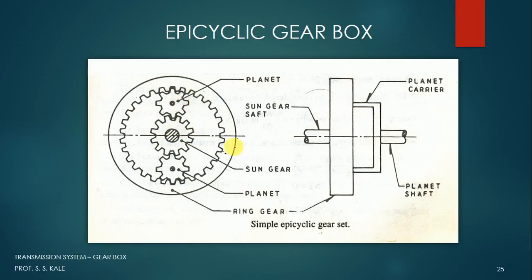Another shaft is connected to the planet gear. There will be one more shaft connected to the ring gear. The ring gear is an internal gear which is in mesh with the planet gear. So in this epicyclic gearbox we have three main components: first is the sun gear, second is the planet gear, and third is the ring gear.